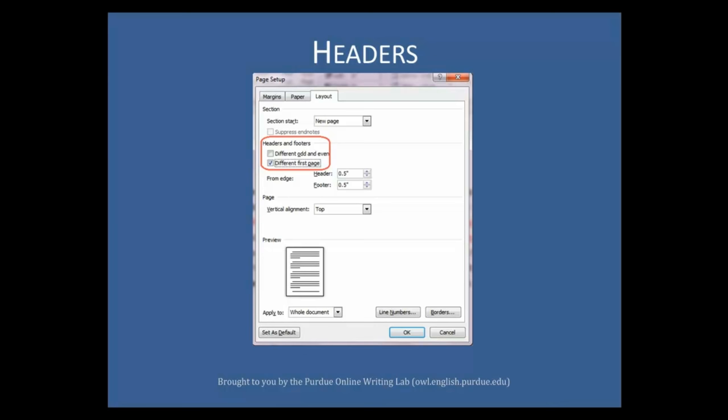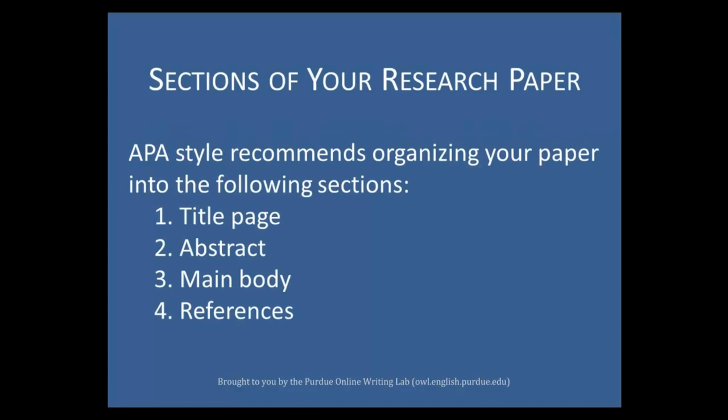Sections of your research paper. APA style recommends organizing your paper into the following sections: title page, abstract, main body, and references.